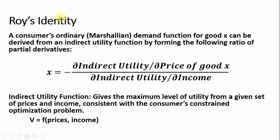Let me define Roy's identity. A consumer's ordinary Marshallian demand function for good x can be derived from an indirect utility function by forming the following ratio of partial derivatives. The demand for good x is found by taking the partial derivative of the indirect utility function with respect to the price of good x, dividing that by the partial derivative of the indirect utility function with respect to income. And we don't want to forget the minus sign out in front.